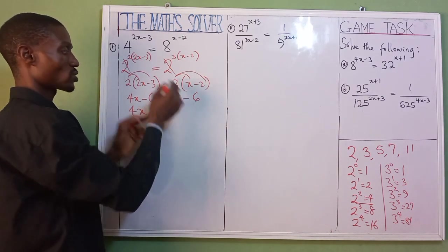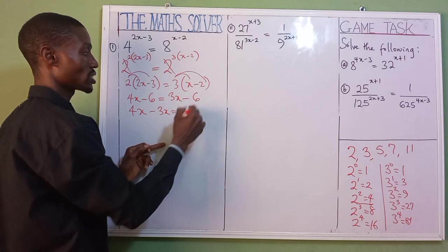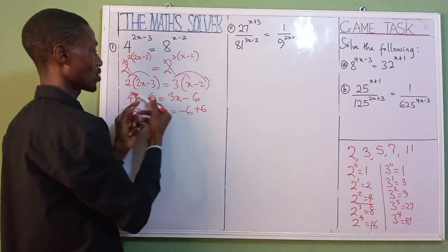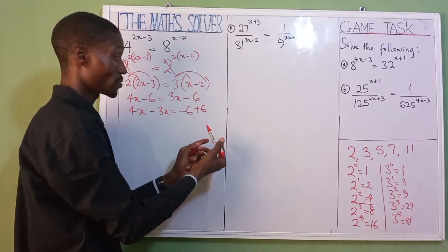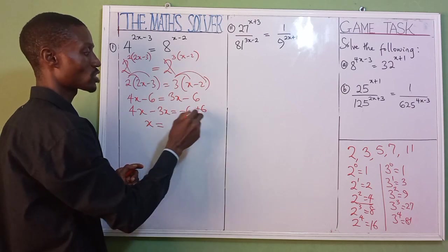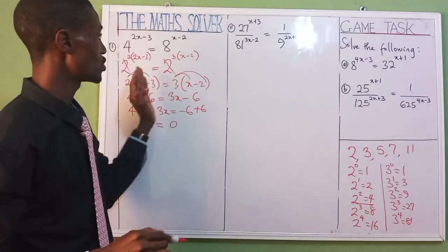So we have 4x, collect your like terms, minus 3x equals minus 6. Bring minus 6—it's going to be plus 6. So 4x minus 3x is x, equals minus 6 plus 6, that is 0. It's as simple as that. Just know the base you are going to use.